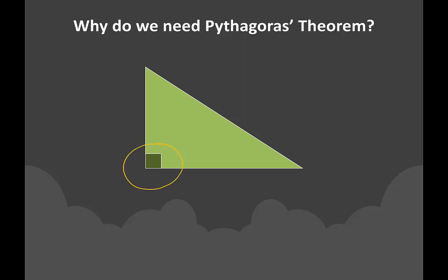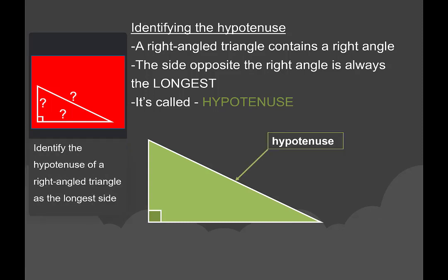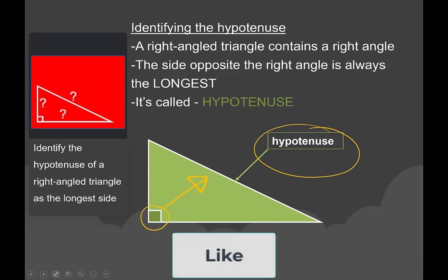This triangle is a right-angled triangle — we know because there's a right-angle sign there. The square sign represents that it is a right-angle. If we've been given this side and this side, then we can use those two sides to work out the longest side of the triangle. The first thing you need to be able to do is identify which is the longest side, and it's called the hypotenuse. The hypotenuse is always opposite the right angle, and it is always the longest side.